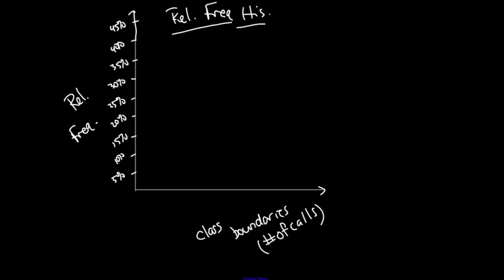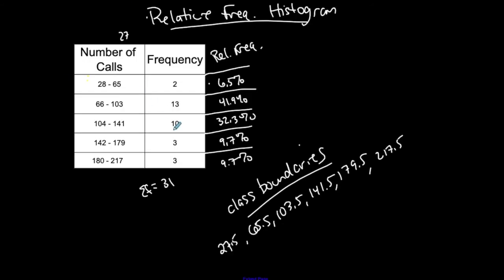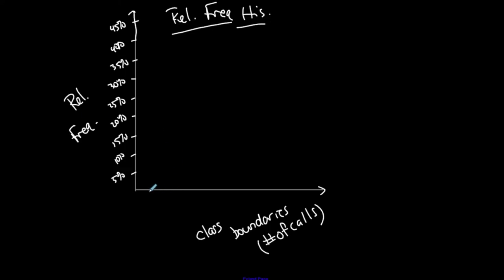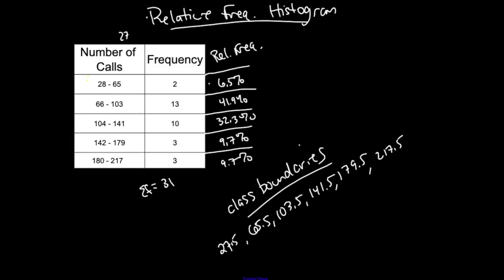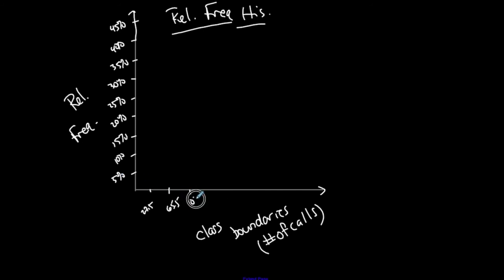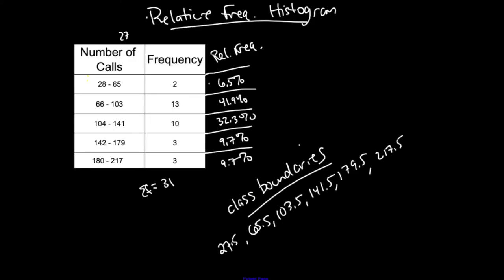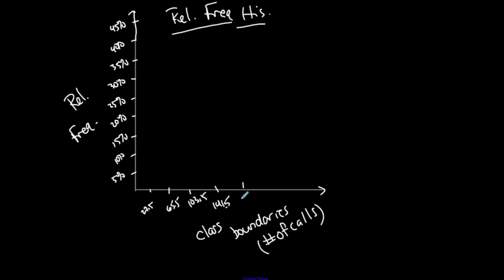My class boundaries, let's label those. What I start with, 27.5, 65.5. So 27.5, 65.5. 103.5, 141. So 103.5, 141.5. So I'm just labeling my relative frequency table, 179, 217. 179.5 and 217.5.